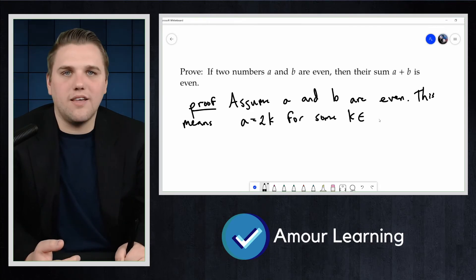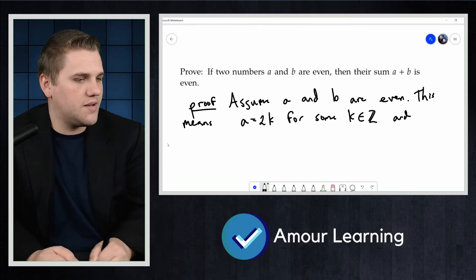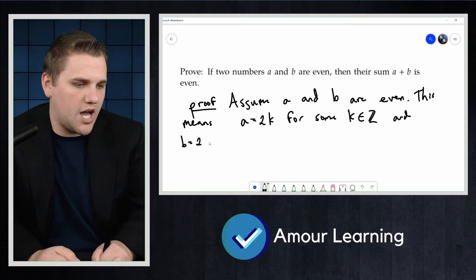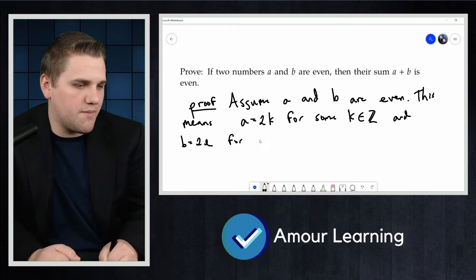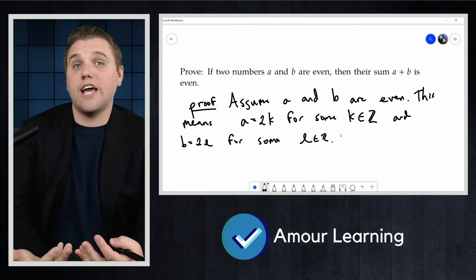So this means that A equals 2 times K for some integer K, and B equals 2 times L for some integer L. That's just what it means to be even.